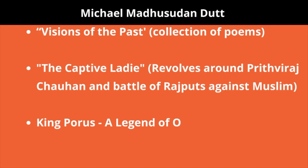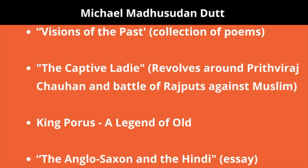He also wrote 'The Anglo-Saxon and the Hindu,' an essay. The common link between all these 19th-century writers is that they looked at the glory of past India — India was a 'sone ki chidiya,' a golden bird. 'Harp of India' by Derozio also talks about India having lost its rich culture. The same theme is visible in Madhusudan Datt's works — all of them have some association with the past.